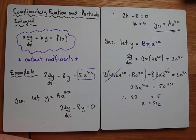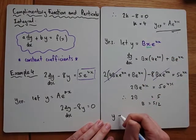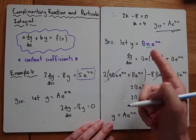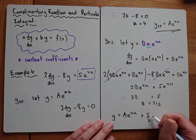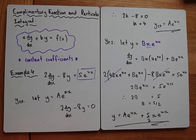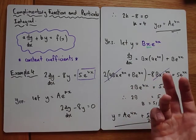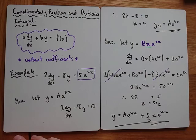Comparing the e to the 4x terms on both sides: 2B e to the 4x equals 5 e to the 4x, so 2B equals 5, giving B equals five over two. Our general solution is y equals A e to the 4x plus five over two times x e to the 4x. It's a fairly abstract technique, but we'll be doing a lot of it over the next couple of weeks and once you've practiced it, it's honestly not that bad. Go back and watch the examples again if you're not fully confident, then try the exercise in the booklet.